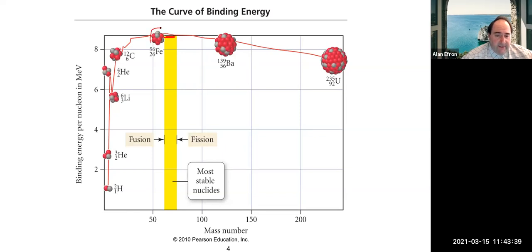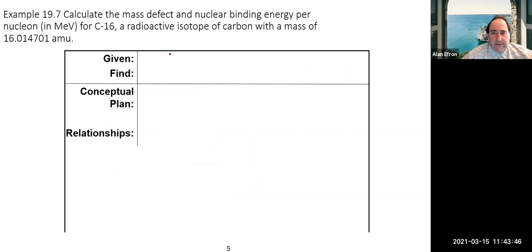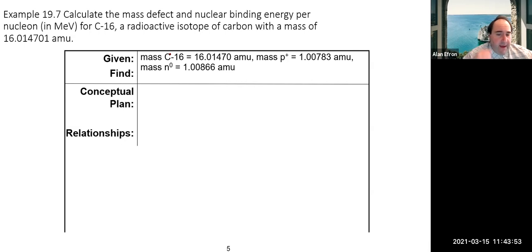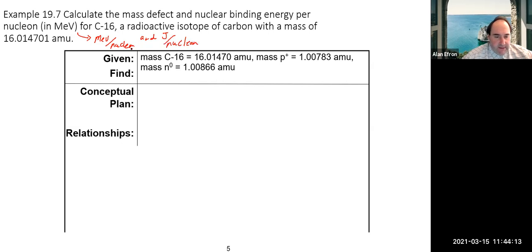Let's calculate the mass defect and nuclear binding energy per nucleon for carbon-16, giving the answer in both mega electron volts per nucleon and joules per nucleon. A useful conversion is 1.602 × 10⁻¹³ joules per mega electron volt. Take a couple minutes to work through it.